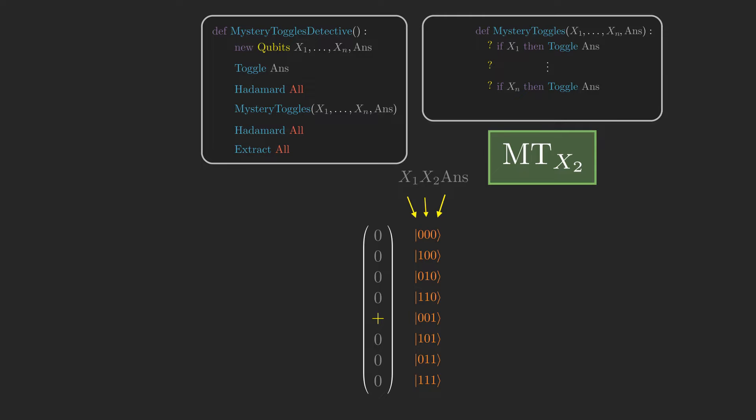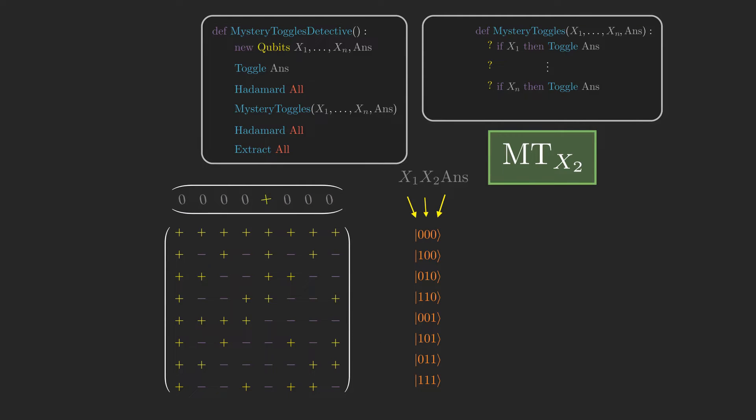The third step is to do Hadamard all. Now because all of the amplitude is in the fifth entry of the state vector, if you know some linear algebra, you may be familiar with the idea that the matrix multiplication of h all of 3 with our state vector essentially selects the fifth column of h all of 3, and the result of the matrix multiplication is this uniform superposition where there is an equal amplitude on all possible input states except the ones where answer is 1 have negative amplitudes.